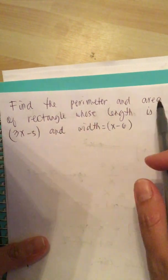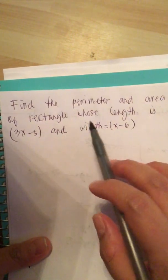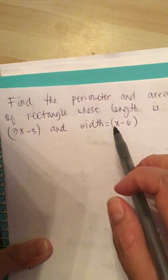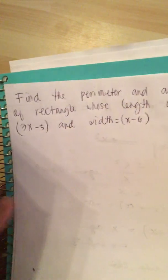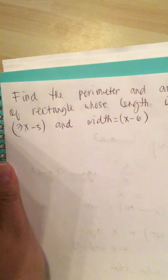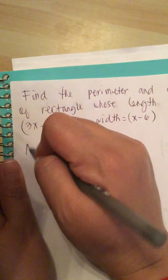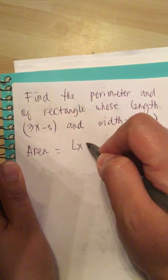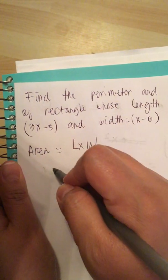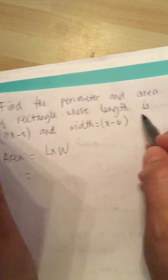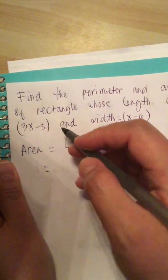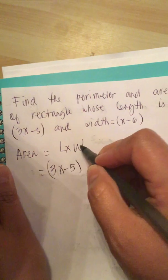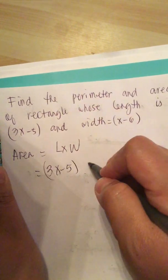Find the perimeter and area of a rectangle whose length is 3x minus 5 and width is equal to x minus 6. The area of a rectangle is equal to length times width. So, the length is 3x minus 5 and the width is x minus 6.